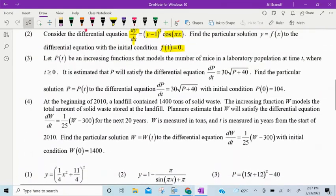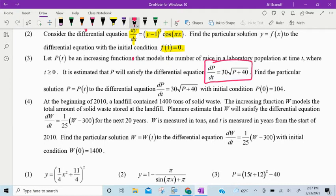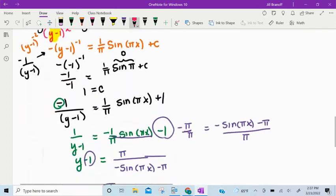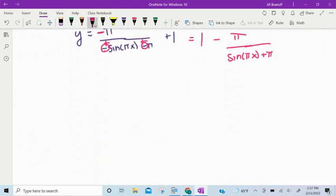Number three. Let p of t be an increasing function that models the number of mice in a laboratory population at time t, where t is greater than or equal to 0. It is estimated that p will satisfy the differential equation dp dt equals 30 times the root of p plus 40. Find the particular solution to the differential equation with this initial condition, p of 0 is 104. This is number 3.